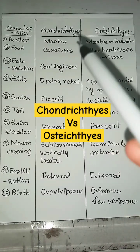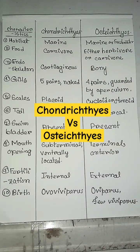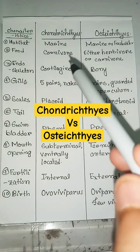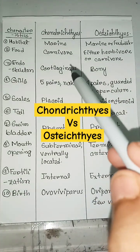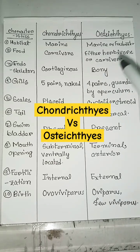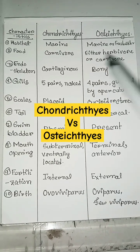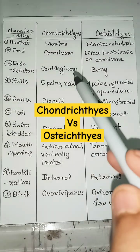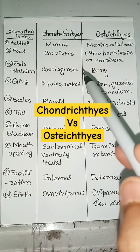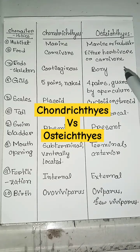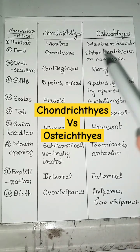Differences between Chondrichthyes and Osteichthyes: Habitat — marine in Chondrichthyes, but marine or freshwater in Osteichthyes. Food — carnivore in Chondrichthyes, but either herbivore or carnivore in Osteichthyes.